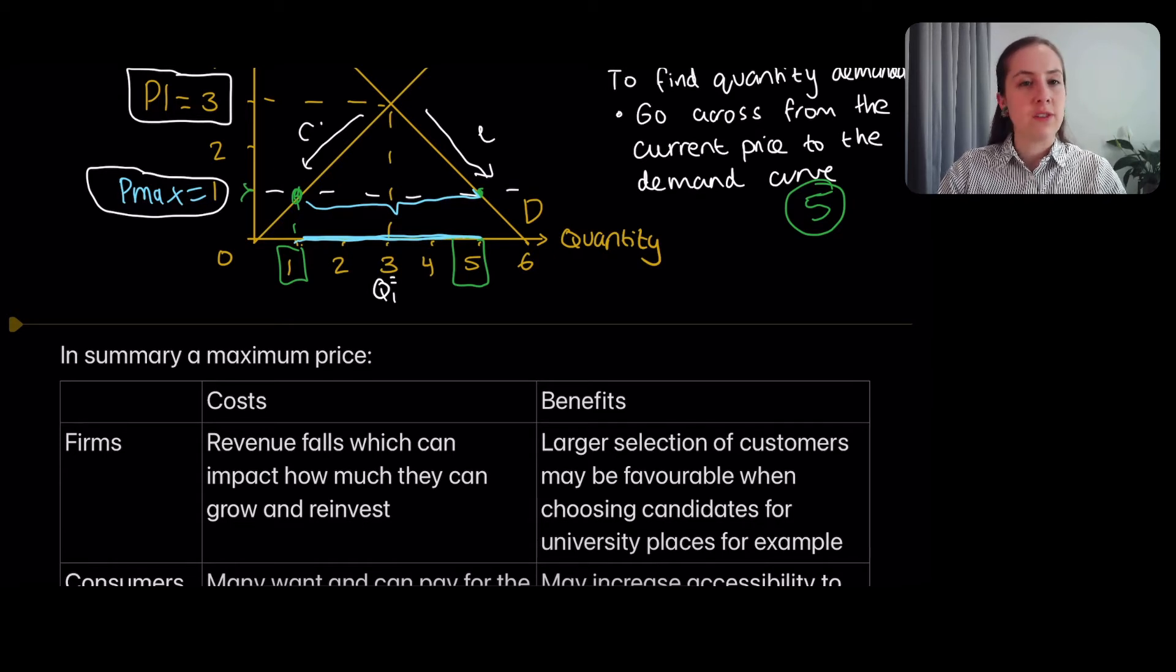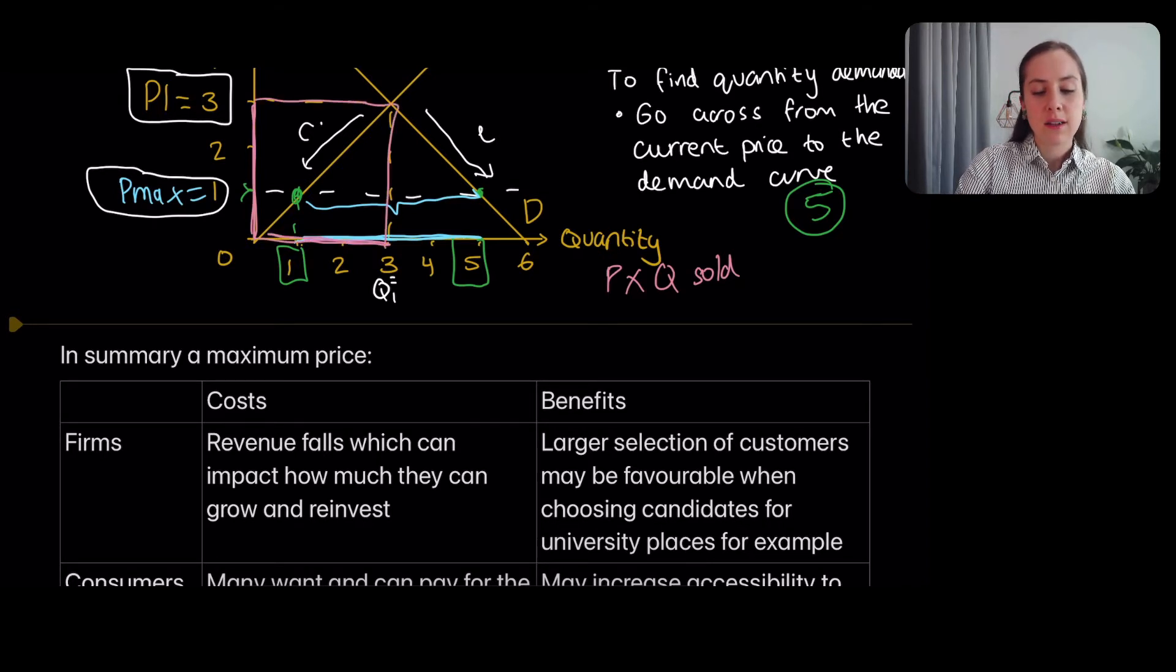Their revenue is going to fall. So to find revenue, all you need to do is multiply the price times the quantity sold. So originally, the price that the firm sold was 3. And these guys had sold 3 units before. So that was the original revenue. Imagine they come from that pink area.